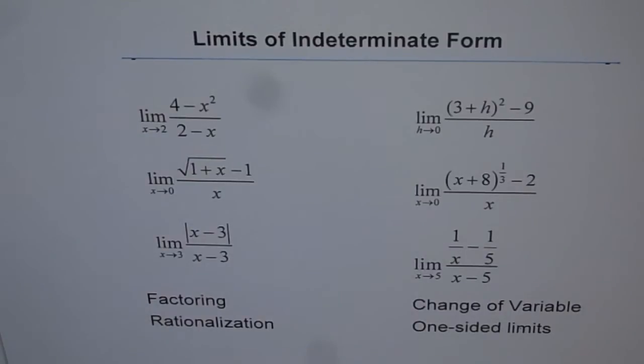Limits of indeterminate form. In this set of videos we are going to tackle and evaluate limits of functions which do not really exist at the limiting value. Another characteristic is that when you substitute the limiting value, you get 0 over 0. Whenever you get 0 over 0 by substituting the limiting value in both numerator and denominator, we say that it is indeterminate form of the form 0 over 0.